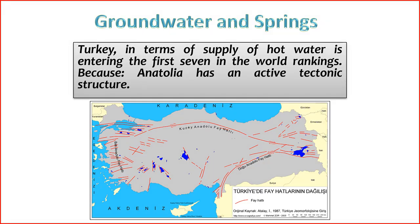Turkey is endowed with diverse groundwater resources and springs, playing a significant role in the country's water supply and ecological balance. 1. Abundance of aquifers — Turkey has numerous aquifers, which are geological formations capable of storing and transmitting groundwater. These aquifers vary in size, depth, and water quality, contributing to the country's overall groundwater potential. 2. Geological diversity — the geological diversity of Turkey, with different rock types and formations, influences the characteristics of groundwater. Various aquifers, such as limestone, sandstone, and volcanic rocks, contribute to the nation's groundwater resources.